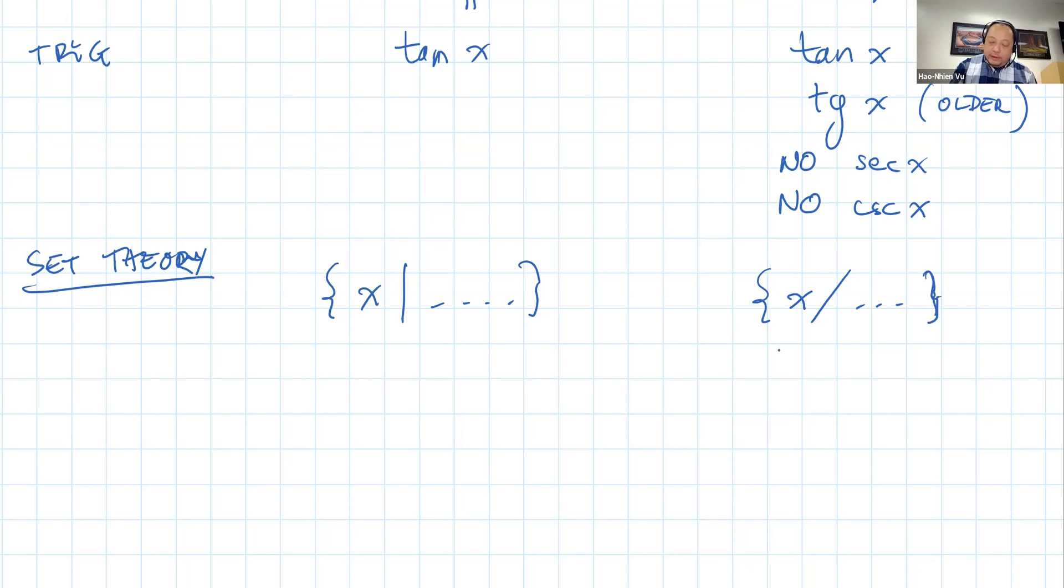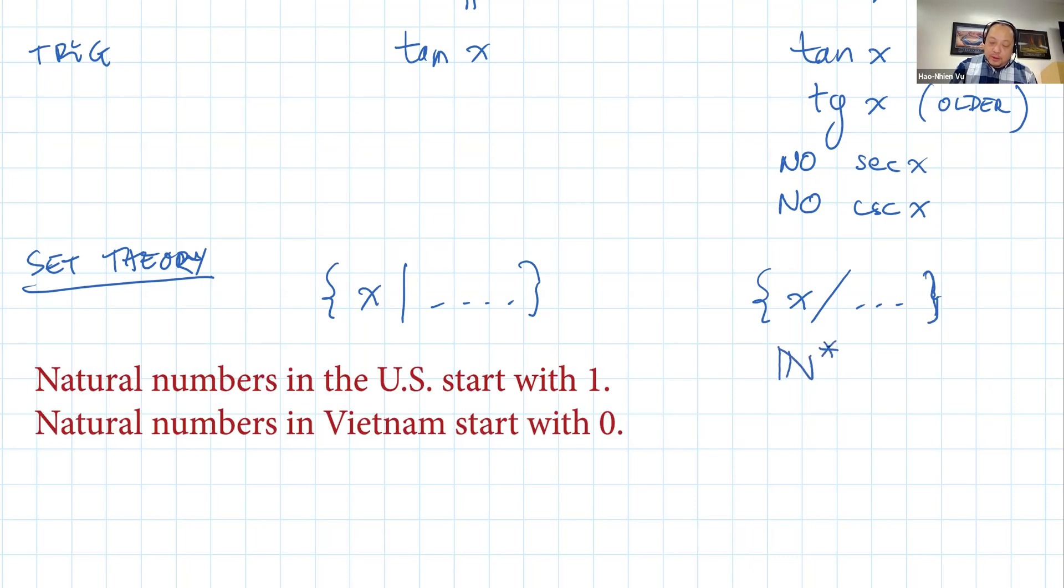The natural numbers in Vietnam includes 0. When you see a Vietnamese student write N*, they mean N but not including the 0 element. So basically the {1, 2, 3}. Except that again because comma is used for decimal place, it's {1; 2; 3; etc}.